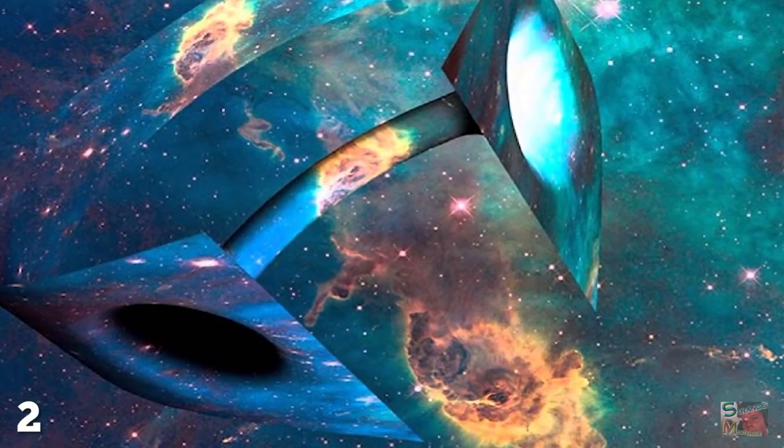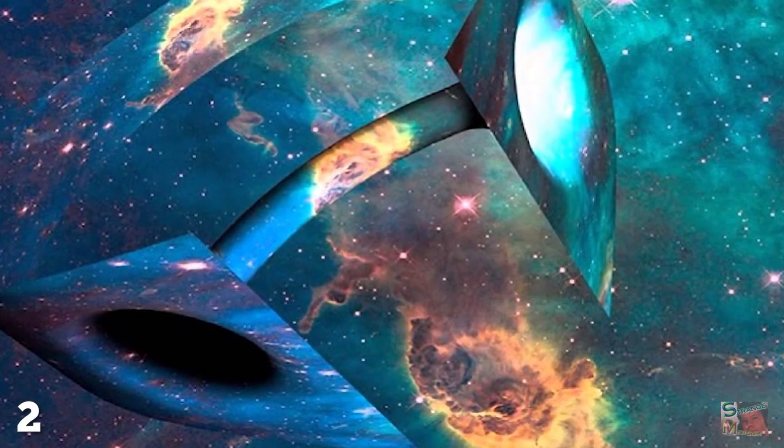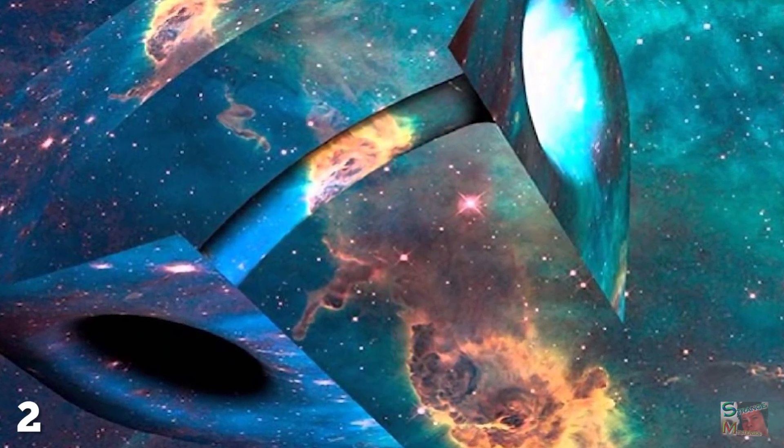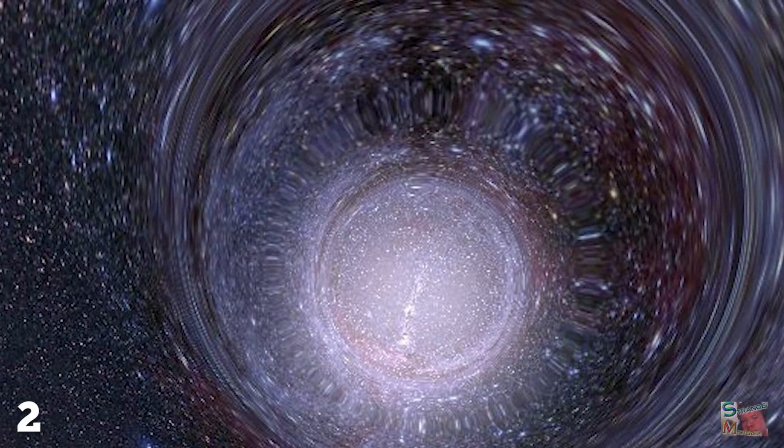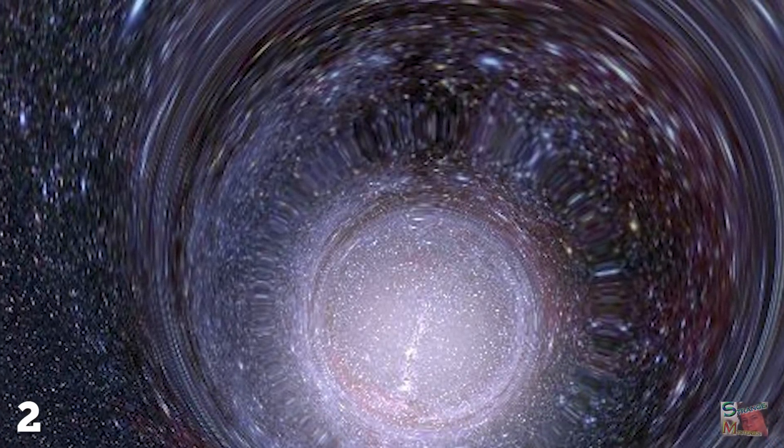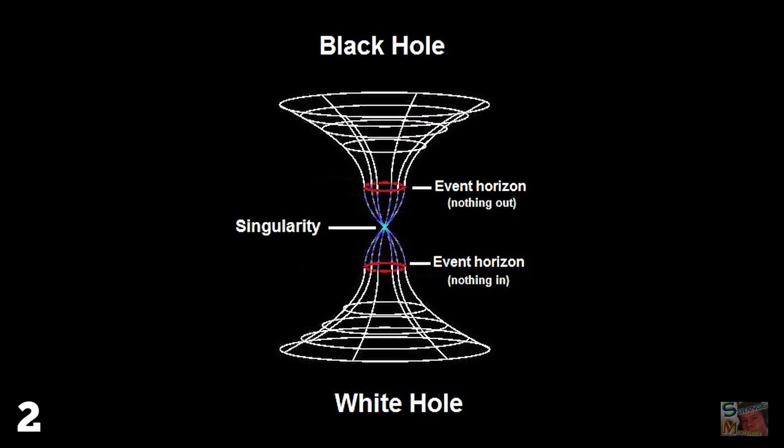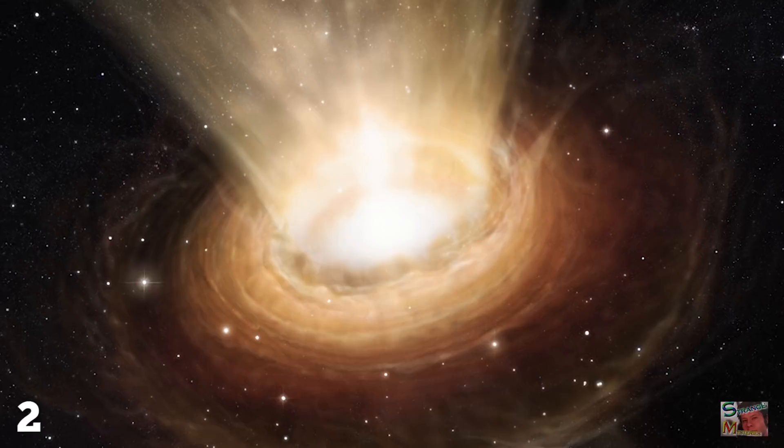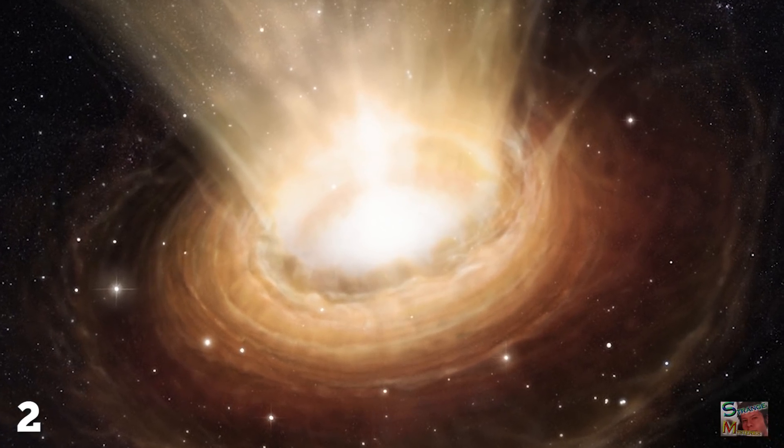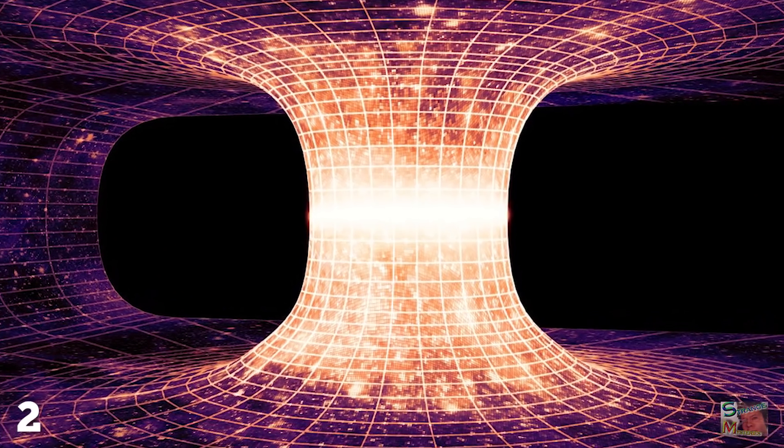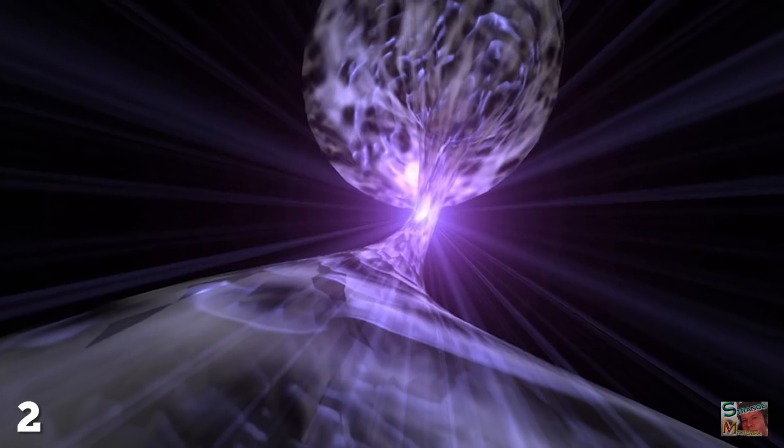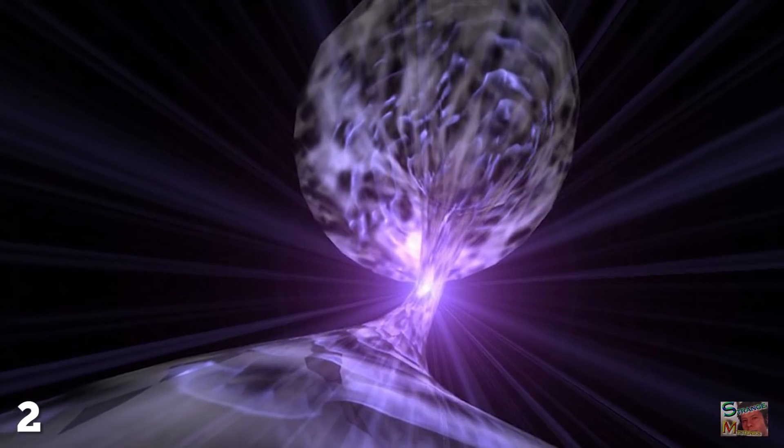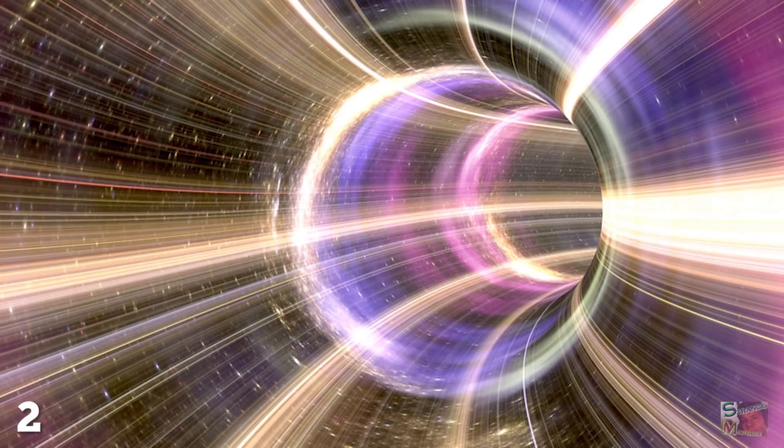But, despite their existence being theoretically possible through the curving up of space-time, we have yet to find conclusive evidence of their natural existence in the universe. Black holes and white holes have been theorized as the exits and entrances of a wormhole, with a singularity of a black hole replaced by the concept of the Einstein-Rosen Bridge, a hypothetical tunnel through space-time that allows objects to move almost instantaneously to another point in the universe.